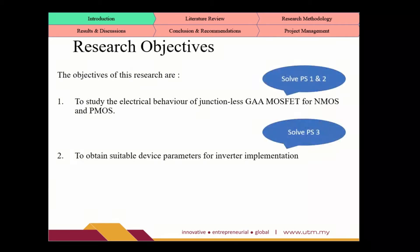The first objective is to study the electrical behavior of junctionless GA MOSFET for NMOS and PMOS — this addresses problem statements 1 and 2. The second objective is to obtain suitable device parameters for inverter implementation, addressing problem statement 3.